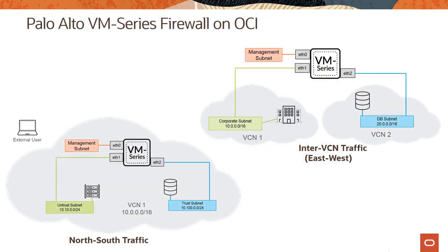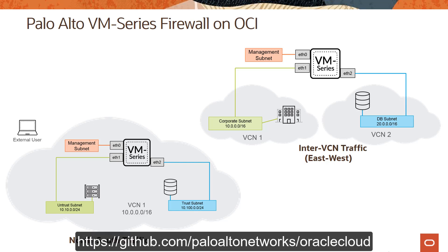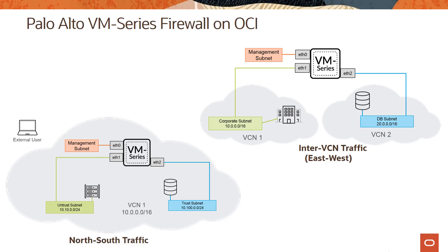We also have the Palo Alto Networks VM-Series next-generation firewall as a certified virtual machine appliance for OCI. You can deploy the VM-Series firewall on OCI either manually through the OCI console or using a Terraform template, which is available on GitHub. To launch it, you first download the QCOW2 image from the Palo Alto Networks customer support portal — look for the PAN-OS for VM-Series KVM-based image, version 8.1.3 or later. Once downloaded, upload the QCOW2 image file to OCI Object Storage and import it to launch an instance in para-virtualized mode. This firewall can be deployed on both bare metal or virtual machine instances.